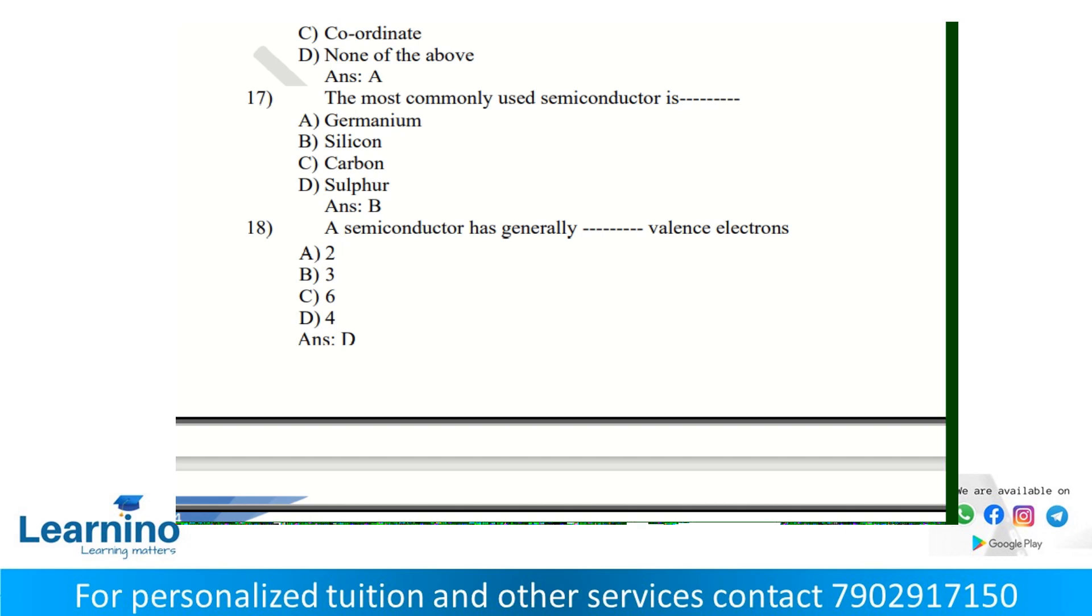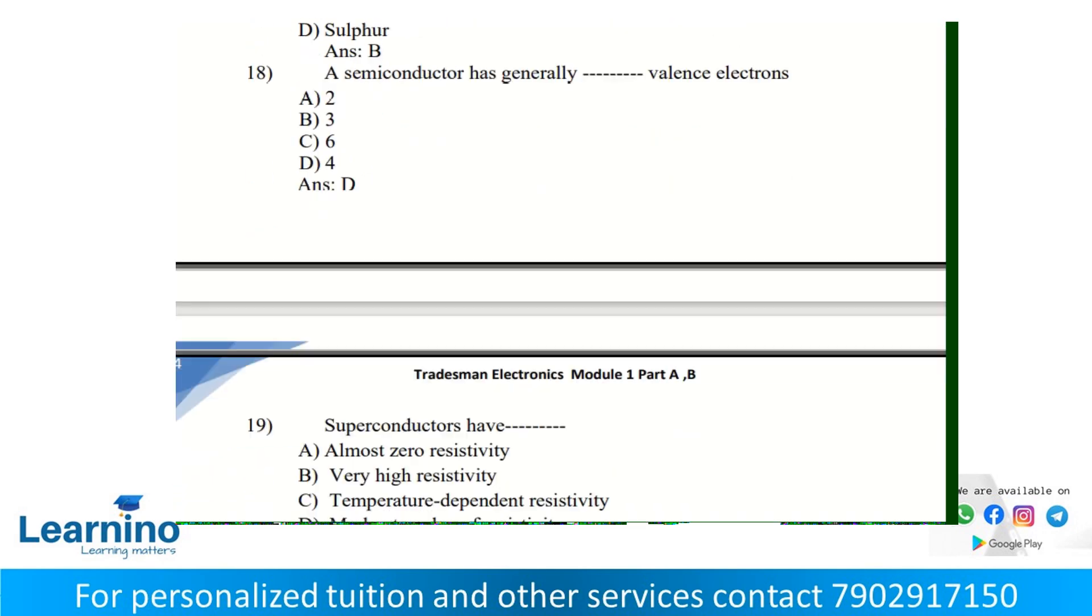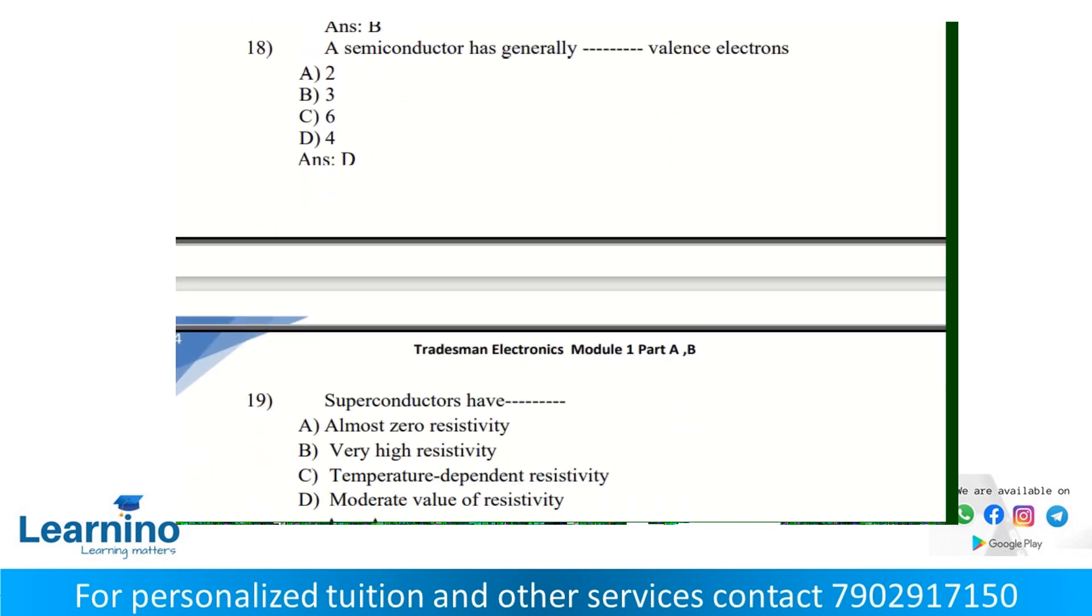A semiconductor generally has four valence electrons. Silicon has atomic number 14 with electronic configuration 1s2 2s2 2p6 3s2 3p2. Germanium has atomic number 32 with configuration 1s2 2s2 2p6 3s2 3p6 4s2 3d10 4p2. Both have four outer shell electrons.